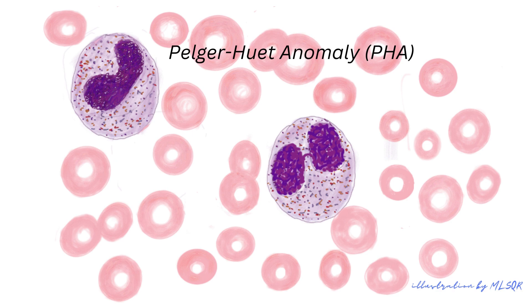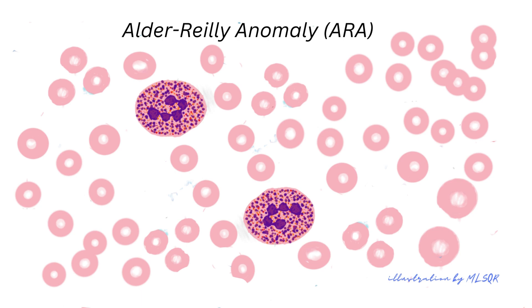See my other video on polymorphonuclear function for more details on bacterial killing. The Alder-Reilly anomaly is an autosomal recessive disorder associated with mucopolysaccharidosis, which is a lysosomal storage disease that involves the accumulation of glycosaminoglycans in the tissues. In the peripheral blood smear, polymorphonuclear cells with large cytoplasmic granules are noted.